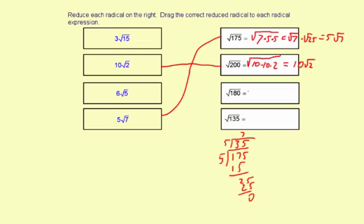Radical 180. Let's see. That's 18 times 10. But 18 times 10, that's not perfect squares.